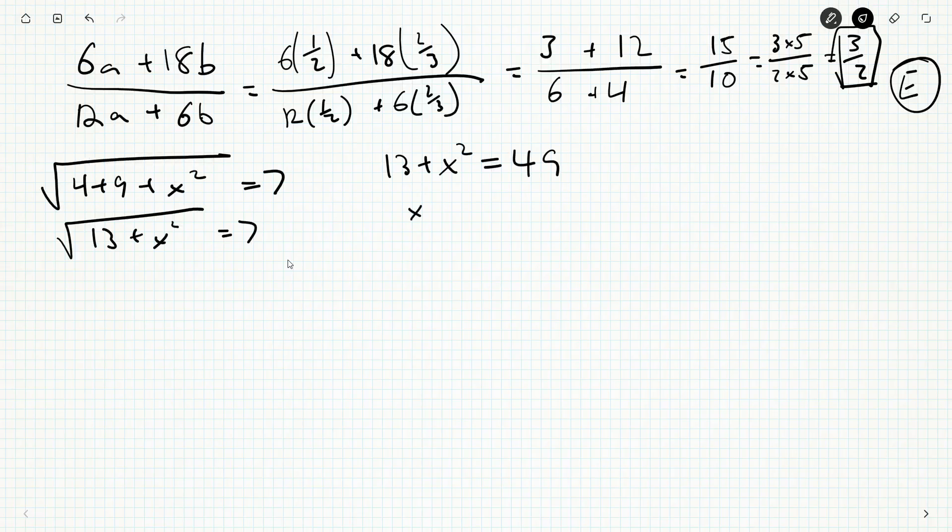Subtract 13 from both sides. We get x squared is 49 minus 13, which is 36. And now if I want x, I square root both sides, but x could be the positive or negative square root. So we get plus or minus six.